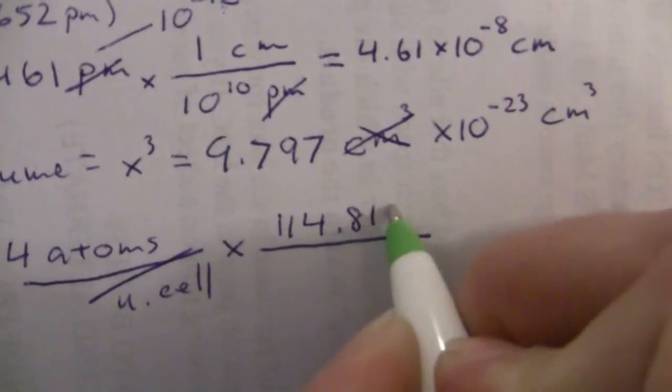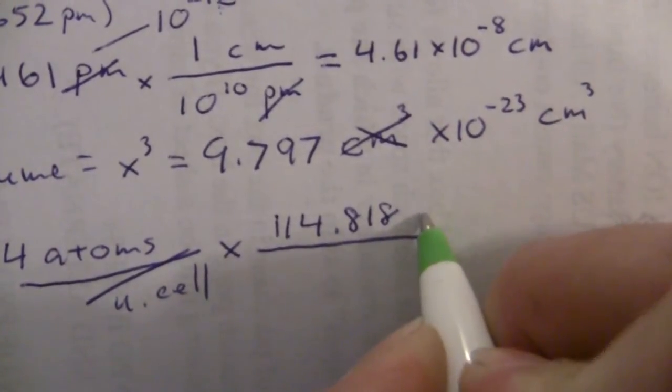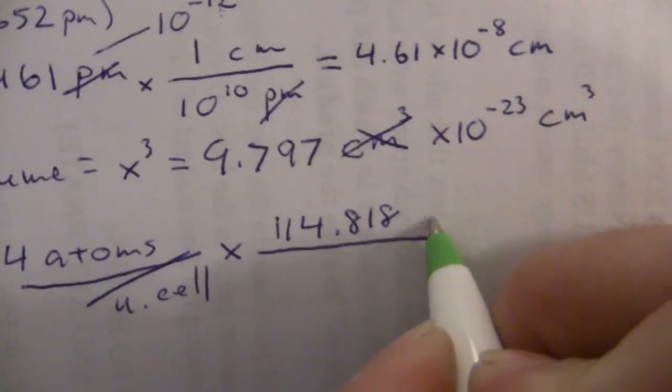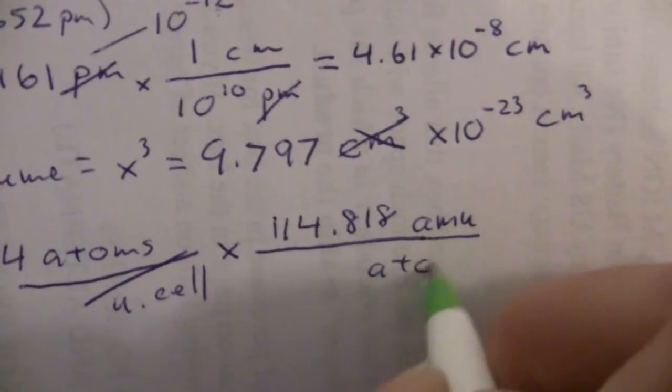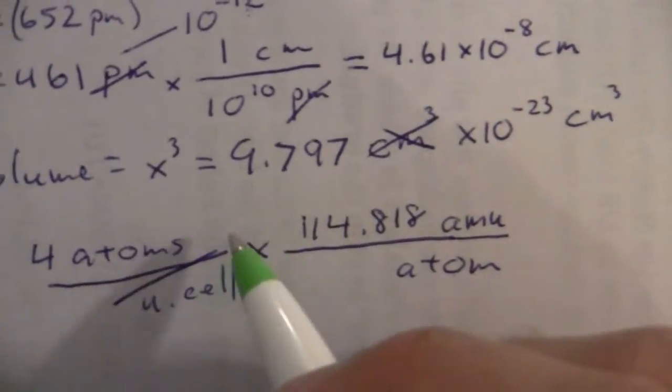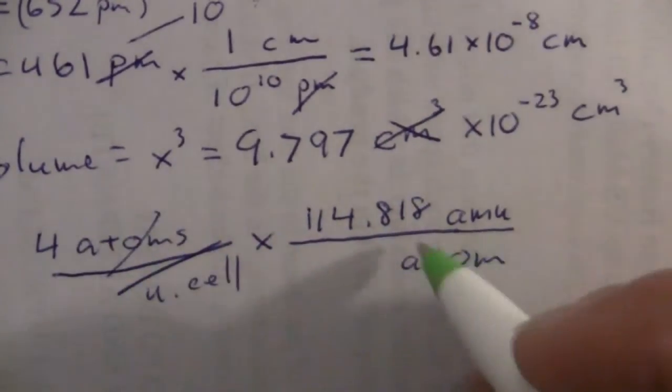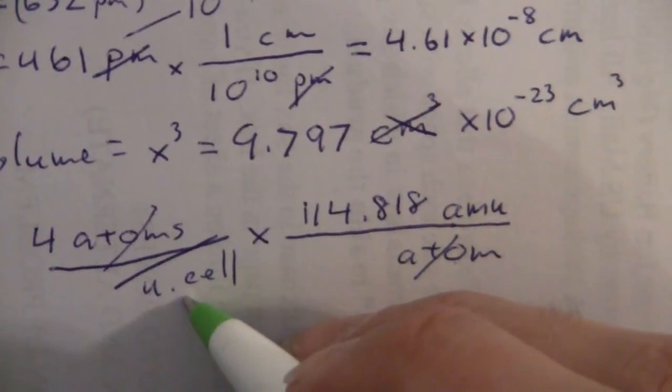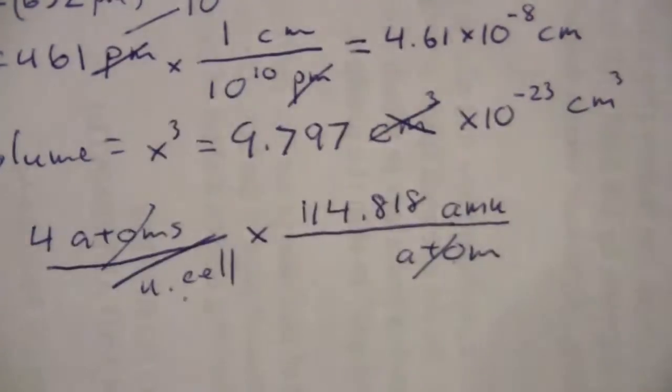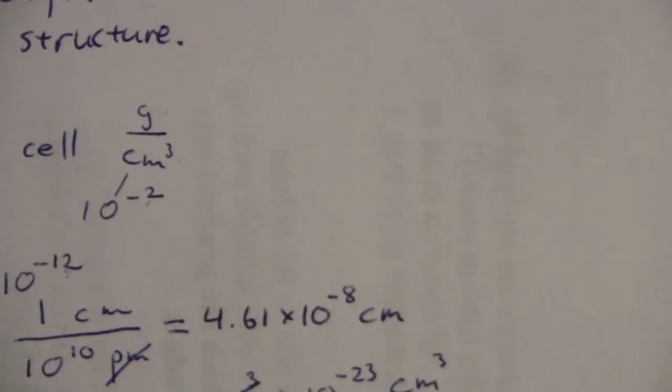114.818, either grams per mole or amu per atom. So now my atoms cancel, and I have so many amu per unit cell. But I want grams per cubic centimeter. So how do I get from amu to grams?